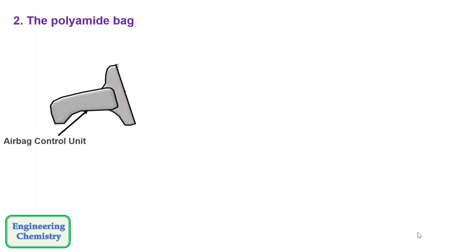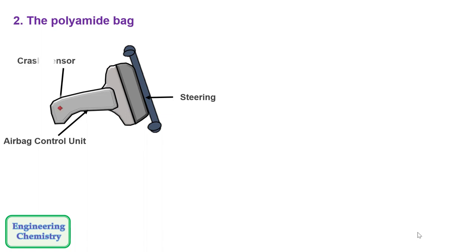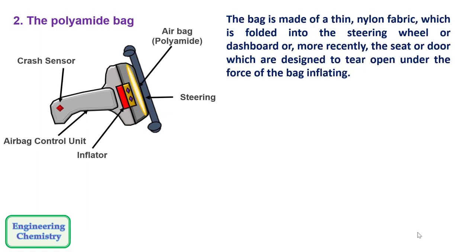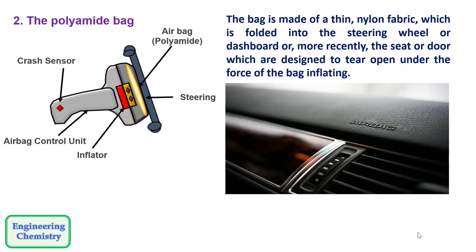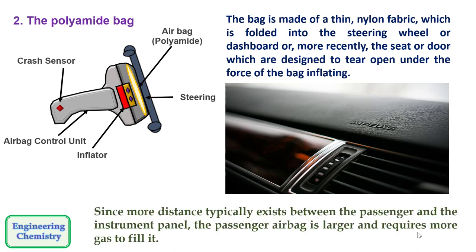The second component is the polyamide bag. In a car, there is first an airbag control unit connected to the steering, a crash sensor, an inflator, and an airbag. The bag is made of thin nylon fabric folded into the steering wheel, dashboard, or more recently the seat or door, and is designed to tear open under the force of the inflating bag. Since more distance typically exists between the passenger and the instrument panel, the passenger airbag is larger and requires more gas to fill it.